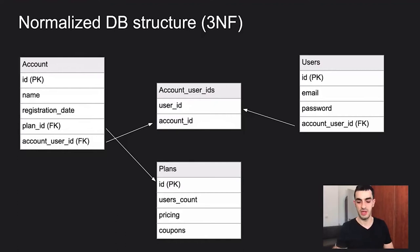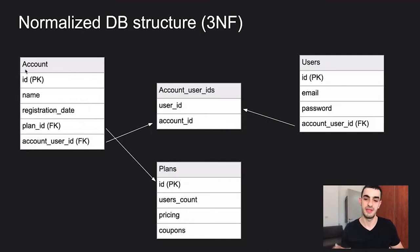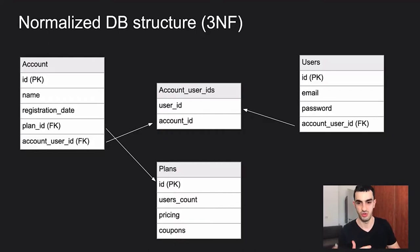Let's start with what a normalized database structure in the third normal form looks like. The normal form ensures we don't duplicate data too much — we normalize data across many tables. For example, if we have an account table, we won't store plan data directly in it but instead use a foreign key to a separate plans table. This is because many accounts share the same plan, and storing it in every row creates duplication we want to avoid in the application database.